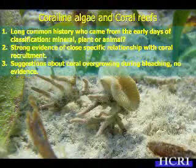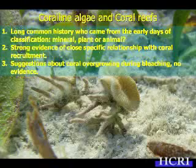Coralline algae and coral reefs have a long common history that came from the early days of classification. Around the 1700s and 1800s, people began thinking about how living things on Earth could be split apart, and there was a lot of debate about what should be called a plant, an animal, or a mineral. The corals and coralline algae were lumped together at that point, and many of the species or generic names for both groups came from that era. This is probably one of the best examples in scientific history of how humans were interpreting plants and animals and splitting them apart.